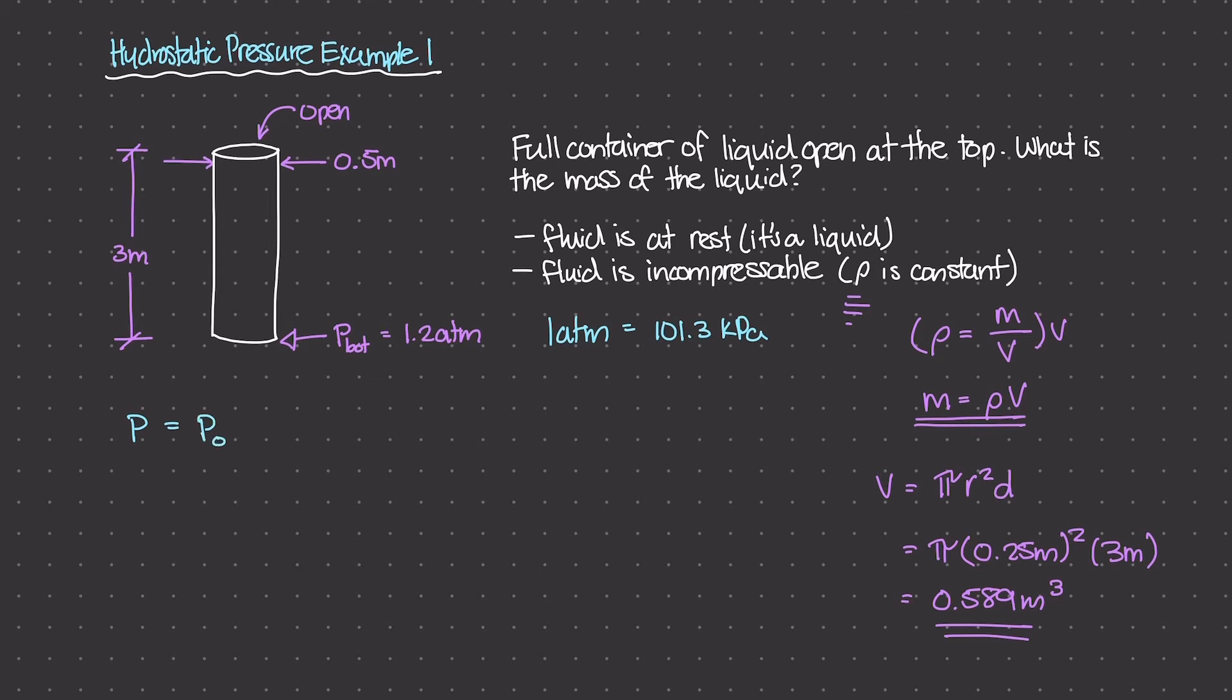Where ρ is the mass density, g is our gravitational constant, and D is the depth. Now, there's a few things that we already know about this equation. We know that we can calculate this pressure P given P₀, ρ, g, and D.